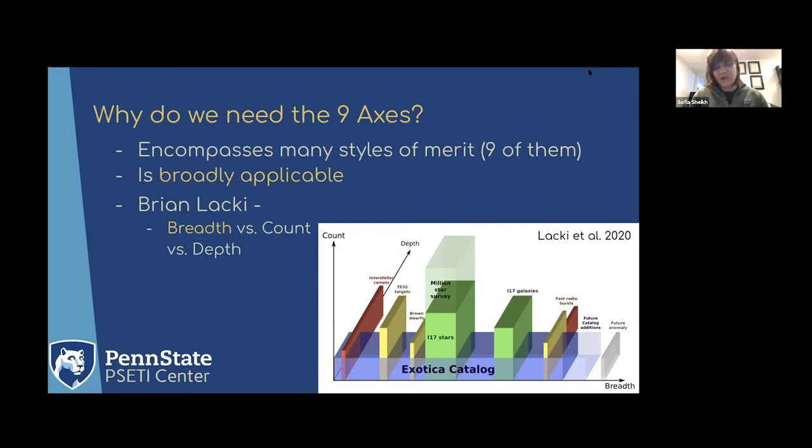The third axis is breadth, and this is where the nine axes are very helpful. If you don't know at all what you're looking for, then you want to make sure you look at at least one example of any class of object you could think of, because you don't have any reason to prioritize one over another. You kind of have a uniform prior. At least for now, we might want to prioritize breadth in our searches. That's what conferences like this are doing—trying to think of as many different approaches as possible and apply them all at the same time. That's why it's useful to have a way to compare the relative strengths and disadvantages of all these different styles of search.